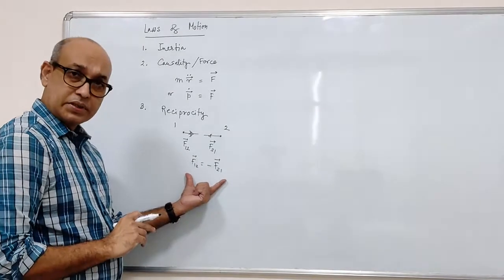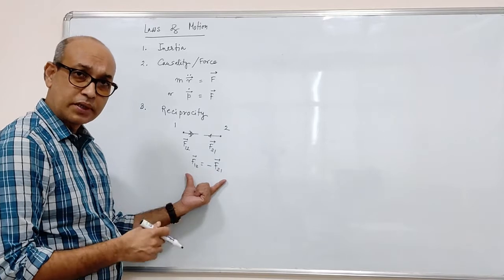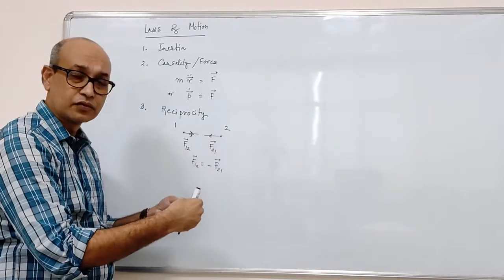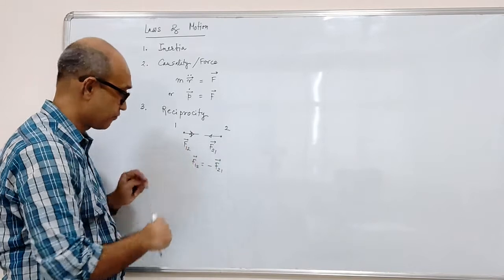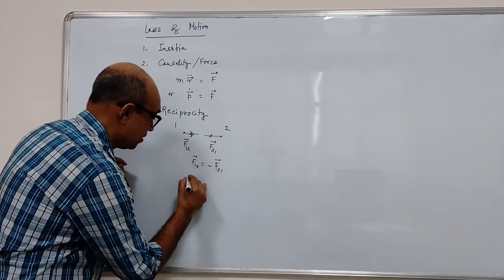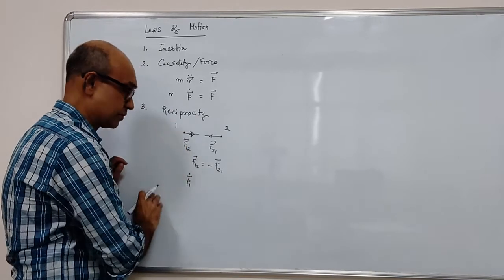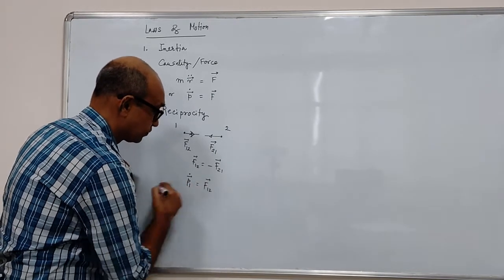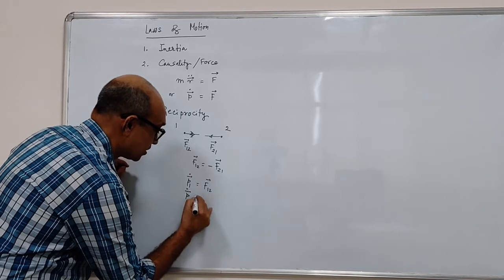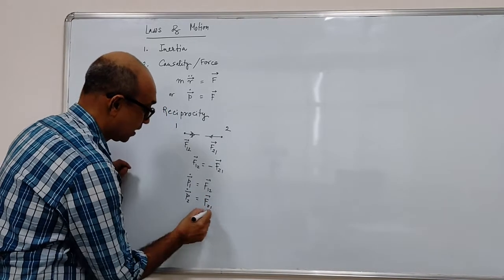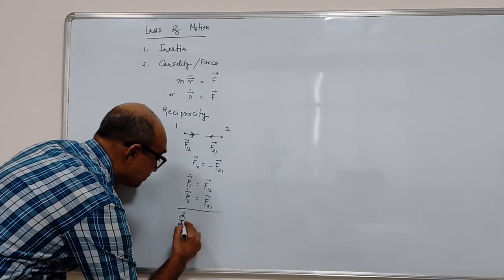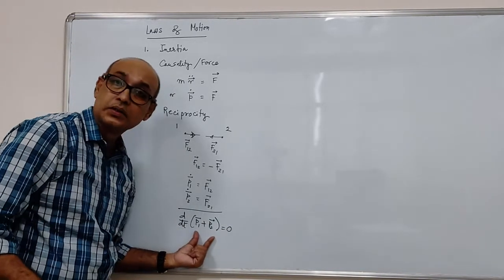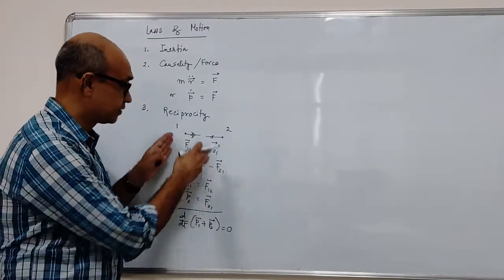One consequence of this law of reciprocity is the conservation of total momentum if only forces which are happening with object 1 and object 2 are internal forces, just like we discussed here. In such cases, the rate of change of momentum of the first object, which is equal to F12, and the rate of change of momentum of the second object, which is equal to F21, their sum simply gives you zero.